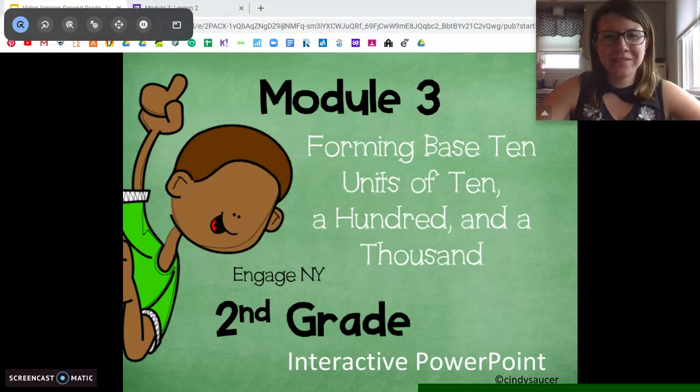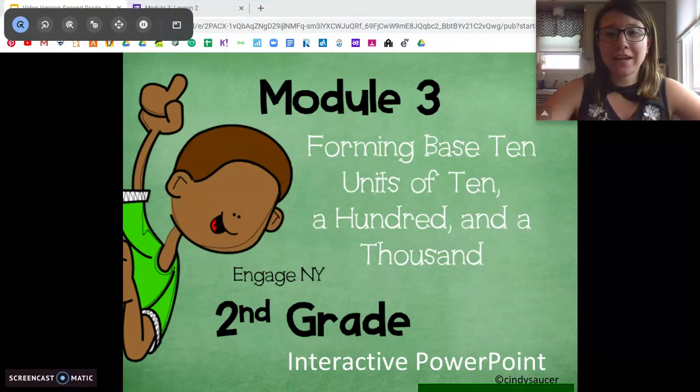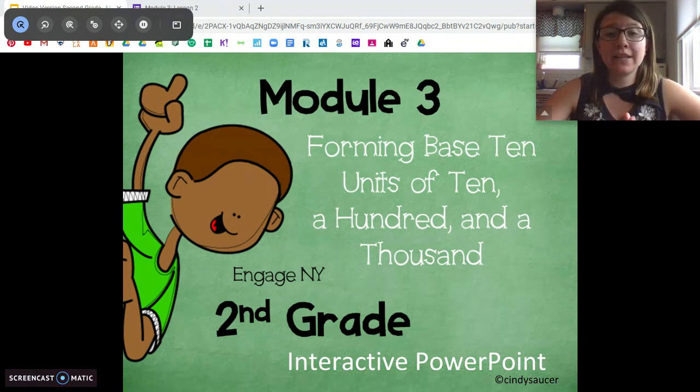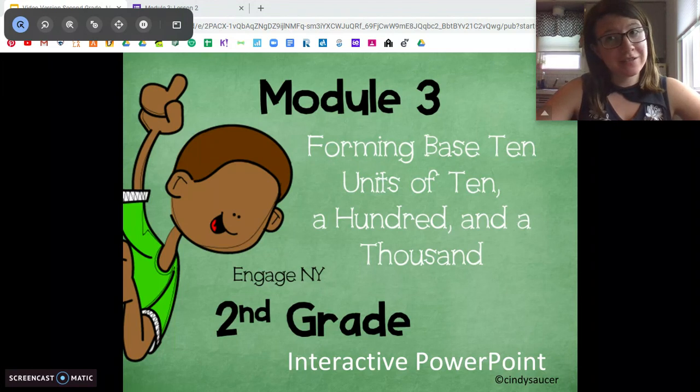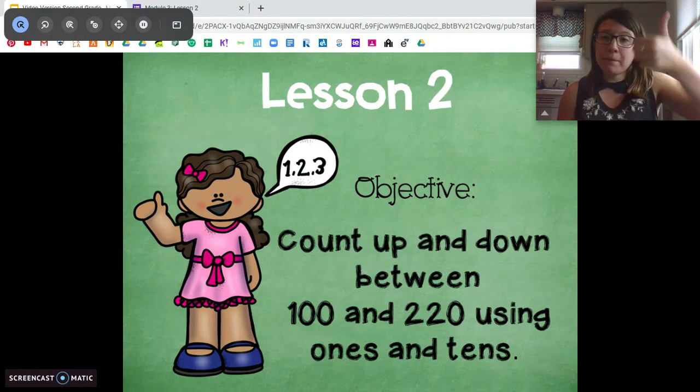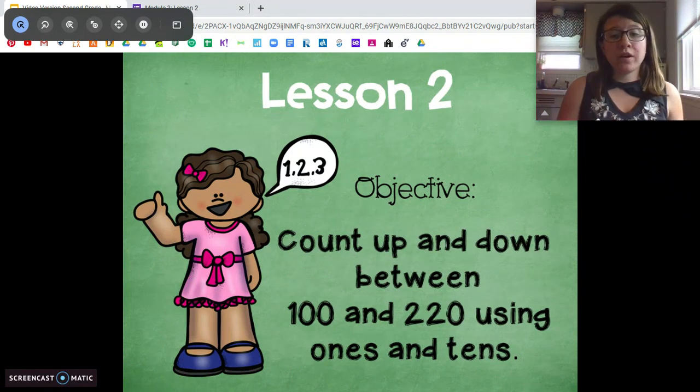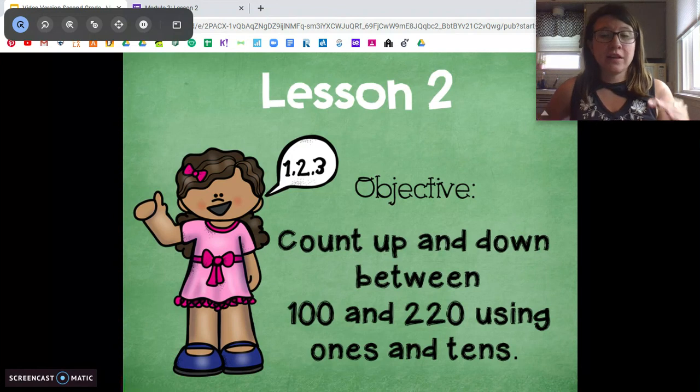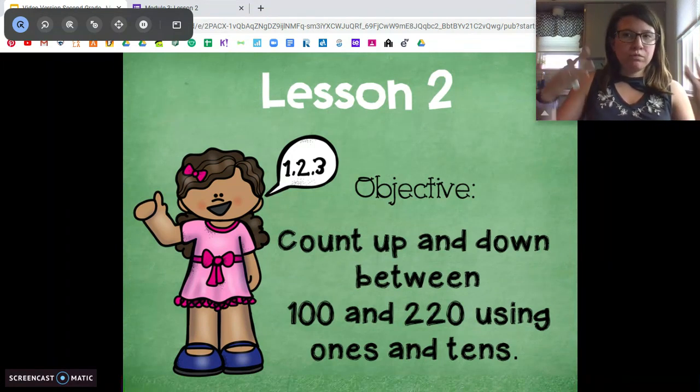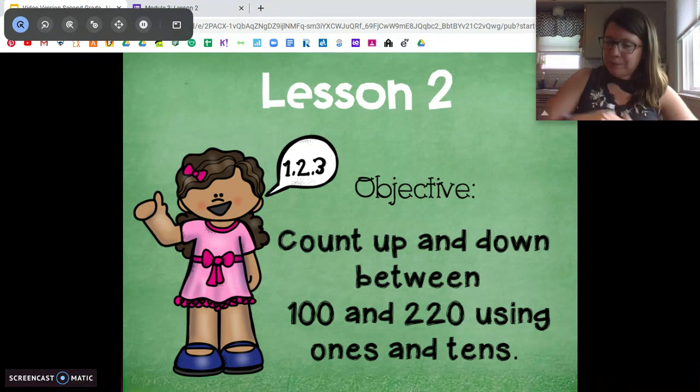Hi everyone, Misty Oriel here from Citizenship Academy with your next lesson in Module 3. Now remember we're working in base 10 units. We learned about thousands, hundreds, and tens yesterday. You guys already know about ones. We're going to move forward with that today. So our objective today is to count up and count down between 100 and 220 using tens and ones. We did a little bit of that yesterday with ones and tens separately. Today we're going to combine them.